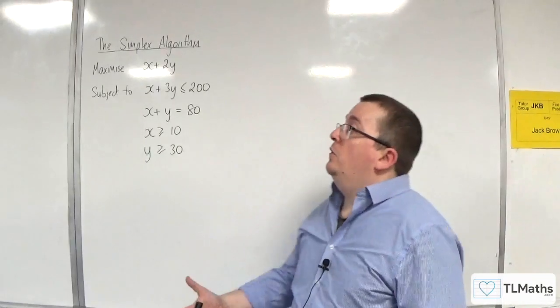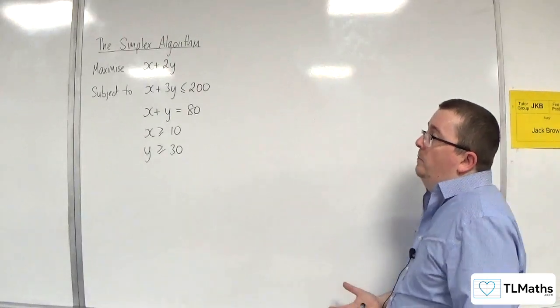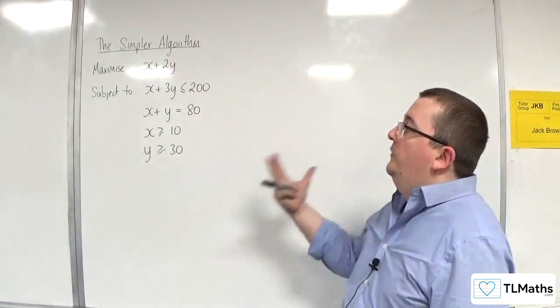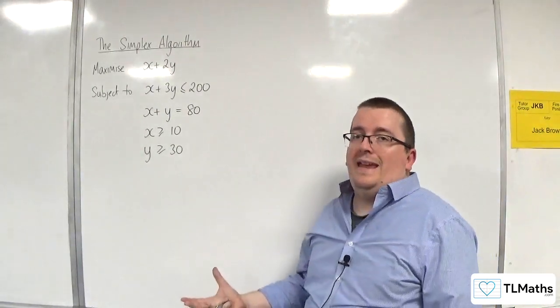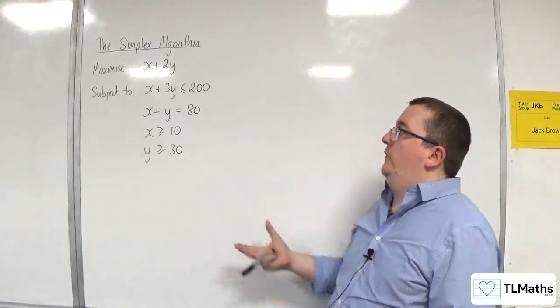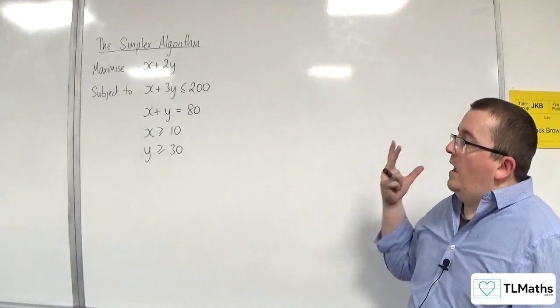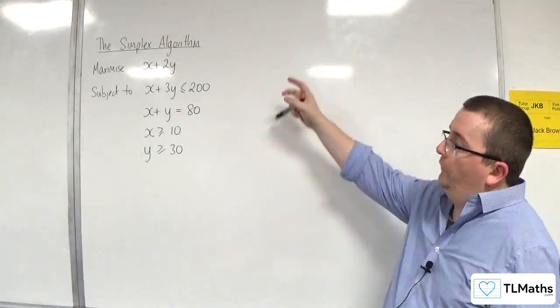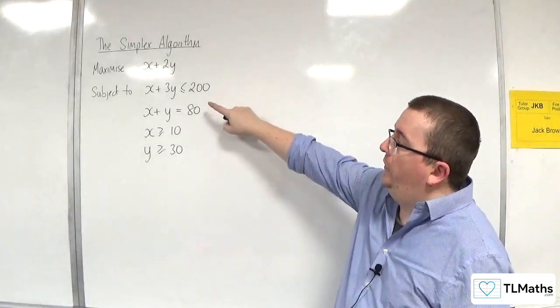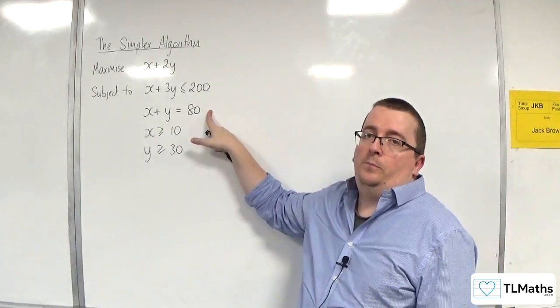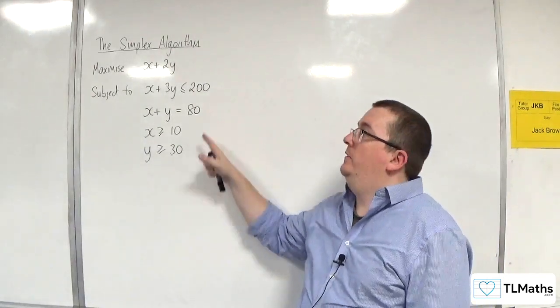In this video, we're going to go through an example of setting up the initial tableau, but this time there's a slight difference because we've got an equality as part of our constraints.